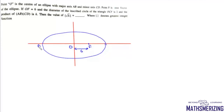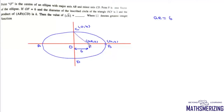The major axis is AB and the minor axis is CD. So F is at (ae, 0) and B is at (a, 0) and C is at (0, b). The diameter of the inscribed circle of triangle OCF is 2 units, so the inradius r = 1. We use r = Δ/s, where Δ is the area and s is the semi-perimeter.